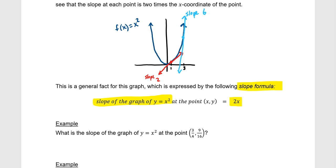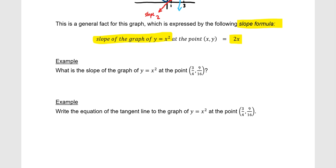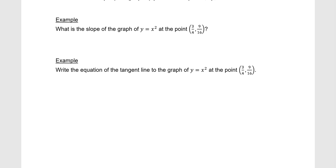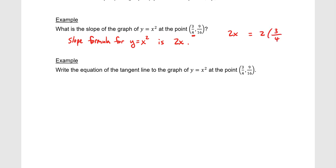Let's look at this example: what is the slope of the graph of y = x² at the point (3/4, 9/16)? We know that the slope formula for y = x² is 2x. We plug in our x-coordinate, which is 3/4, giving us 2 times 3/4. Simplifying, that gives us 6/4, which reduces to 3/2. So the slope at the point (3/4, 9/16) on the curve y = x² is 3/2, which is also the slope of the tangent line.